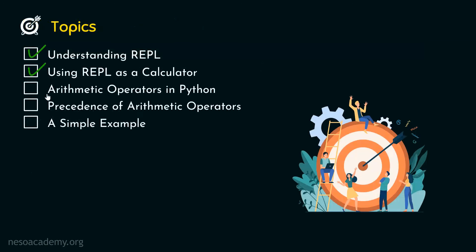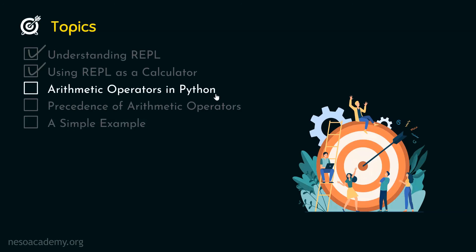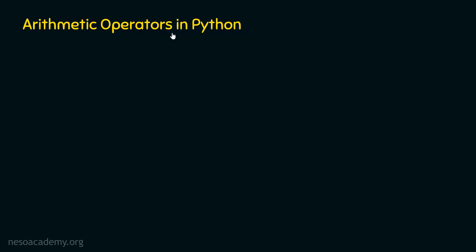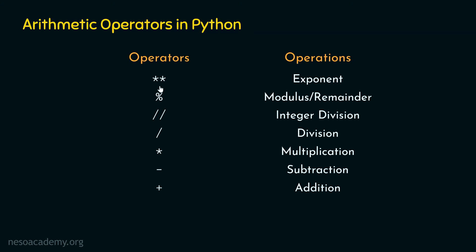Now let's see what are the different arithmetic operators available in Python. We have a bunch of them: exponent, modulus or remainder, floor division or integer division, division, multiplication, subtraction, and addition. These are all the arithmetic operators available in Python, meaning we can perform all these arithmetic operations. To demonstrate them, we need to go to our command prompt.